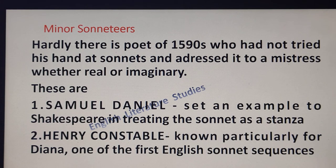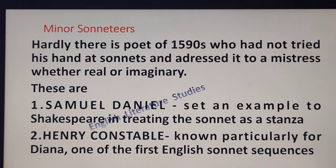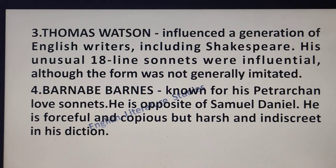Now let us talk about minor sonneteers. Hardly there is a poet of the 1590s who had not tried his hand at sonnets and addressed it to a mistress, whether real or imaginary. These are Samuel Daniel, Henry Constable, Watson, and Barnes. Samuel Daniel set an example to Shakespeare in treating the sonnet as a stanza. Henry Constable is known particularly for Diana, one of the first English sonnet sequences. Thomas Watson influenced a generation of English writers, including Shakespeare. His unusual 18-line sonnets were influential, although the form was not generally imitated.